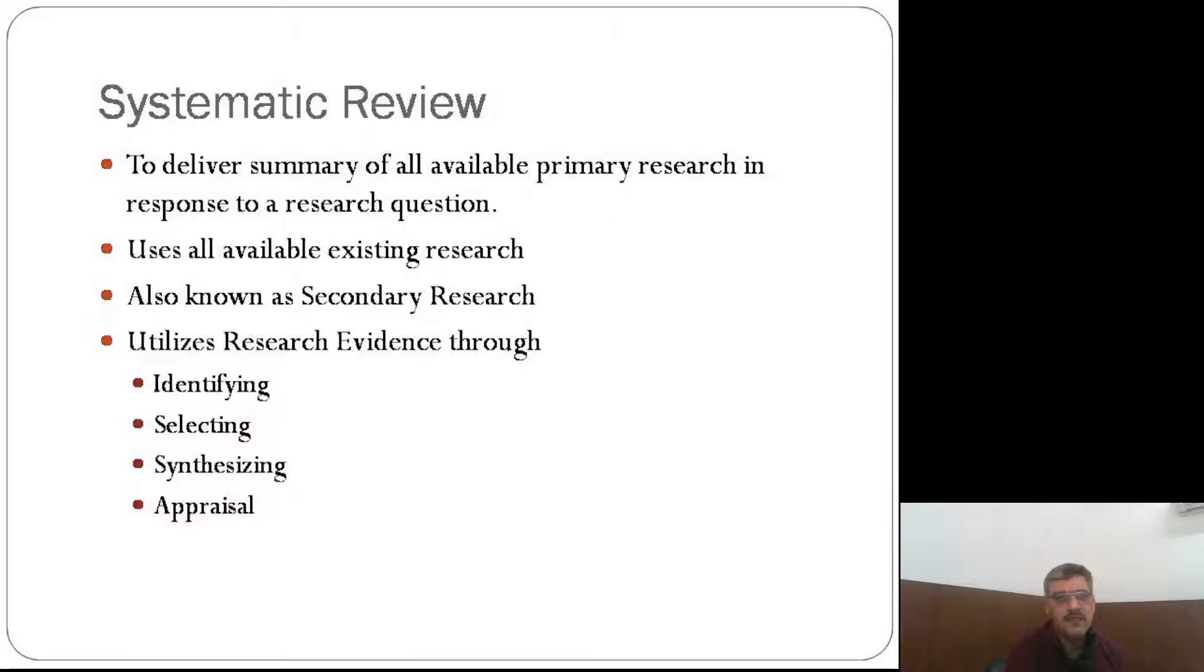First we shall study about systematic review. Systematic review is to deliver the summary of all available primary research in response to a research question. Some research question has come to us, and whatever research has already been done into that particular area, we shall collect all the summary of that. It uses all available existing research, therefore it is also known as secondary research.